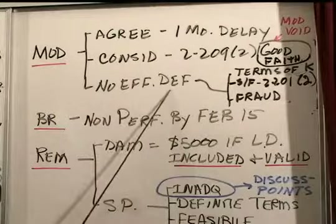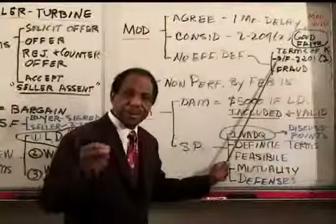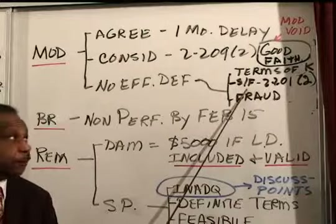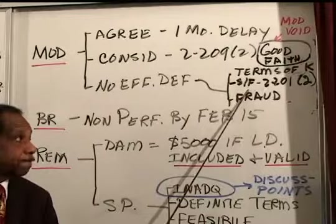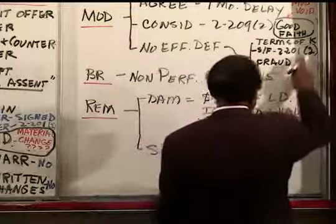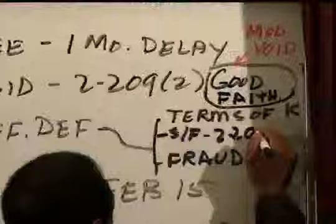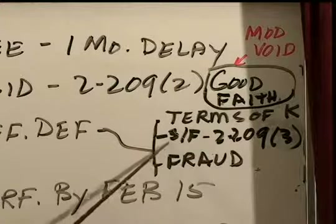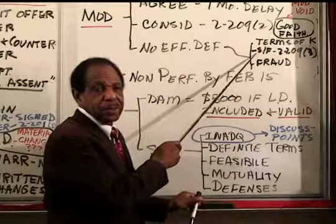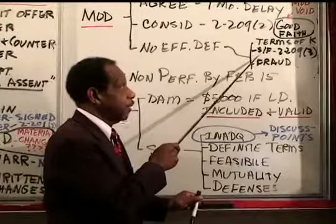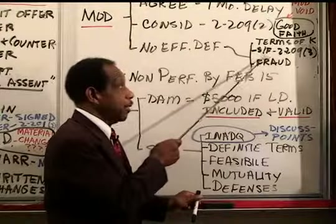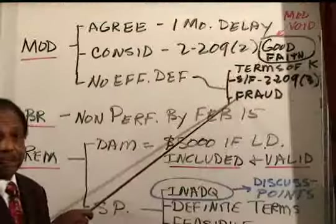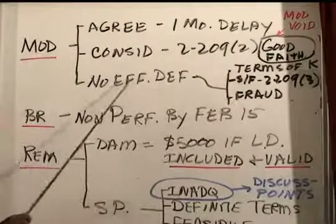As to other effective defenses to the modification: first, the terms of the contract itself say that all changes must be in writing, and this modification is not in writing. Second, under UCC 2-209, subsection 3, if the contract as modified is for the sale of goods for $500 or more, the modification must be in writing, and here the contract as modified is still for the turbine at over $500. Third, there is plain fraud and bad faith. So for all these reasons, the modification is not effective. Since the modification is not effective and there was non-performance by February 15th, there was a breach on February 15th, and buyer seeks remedies.